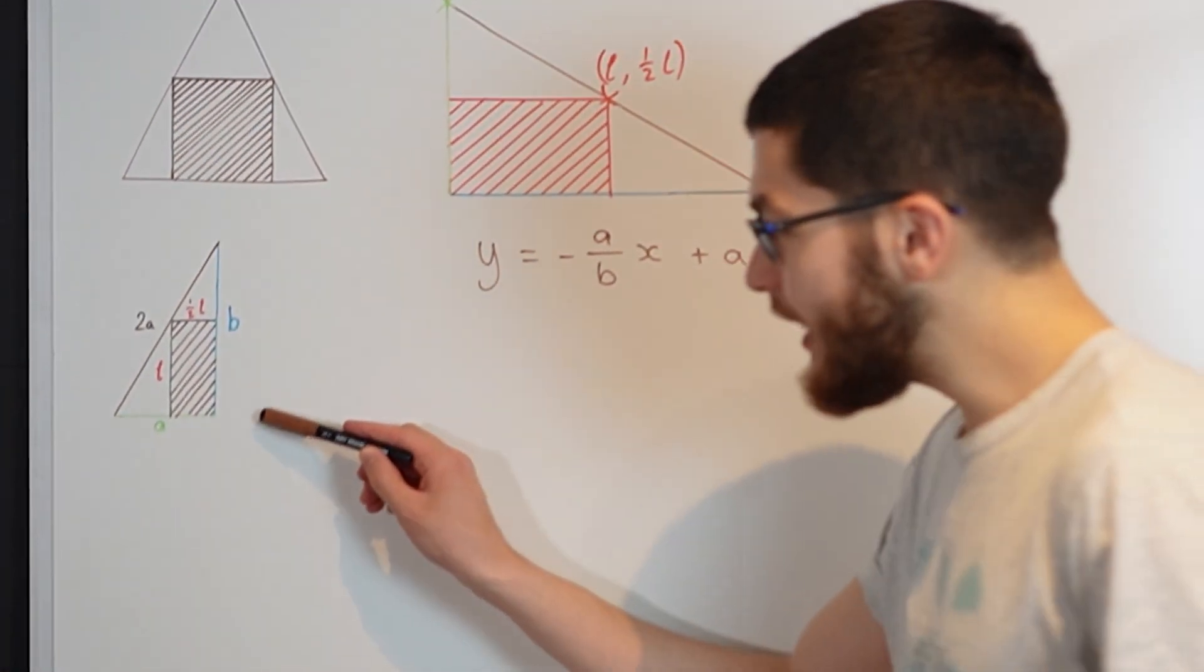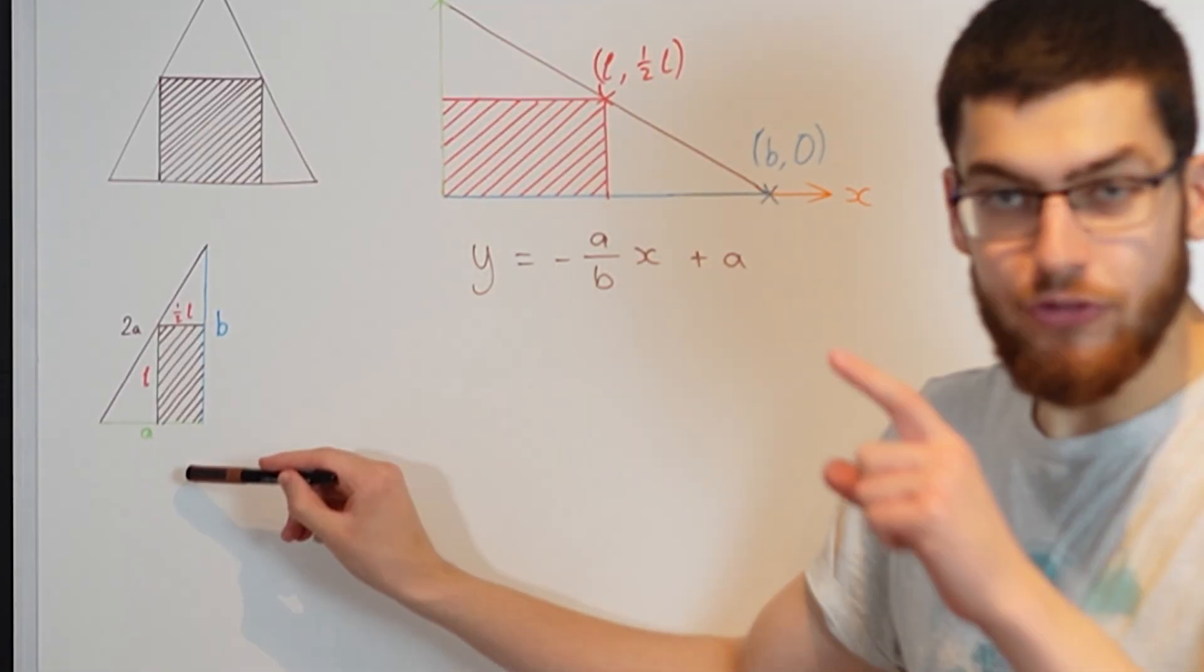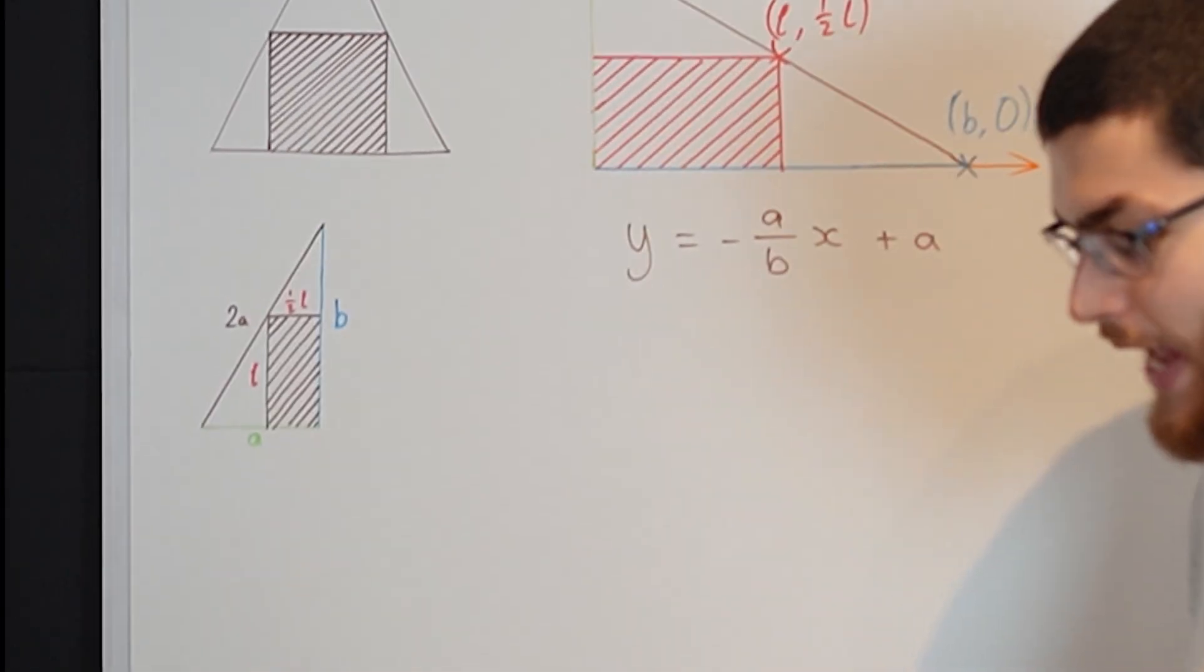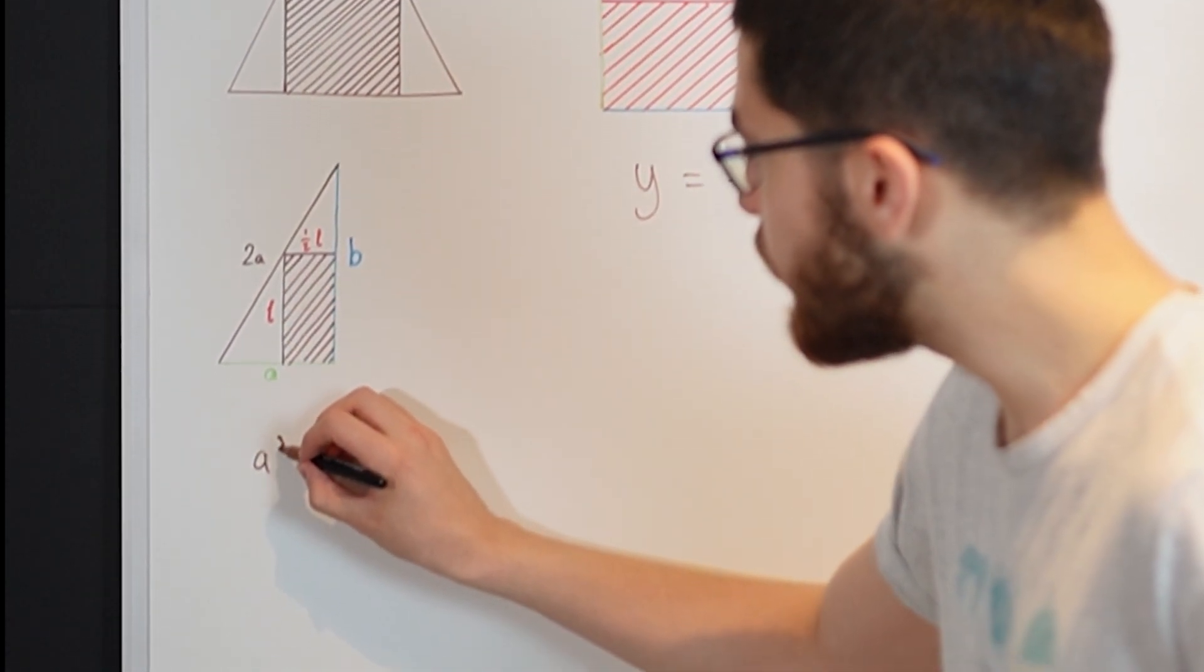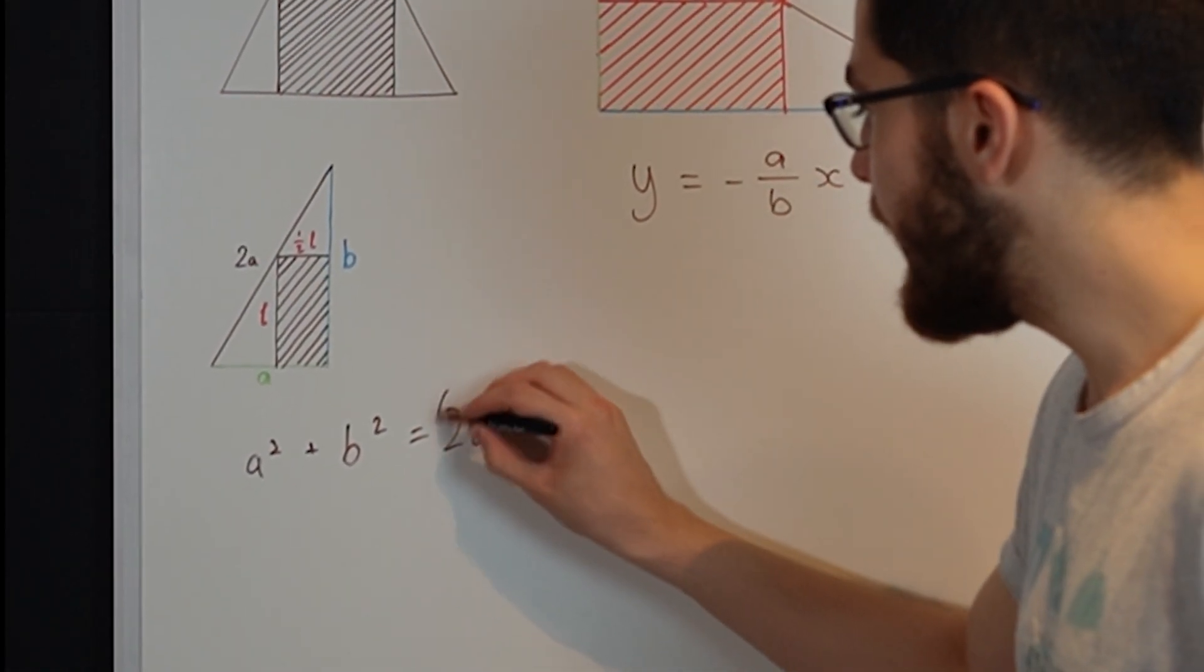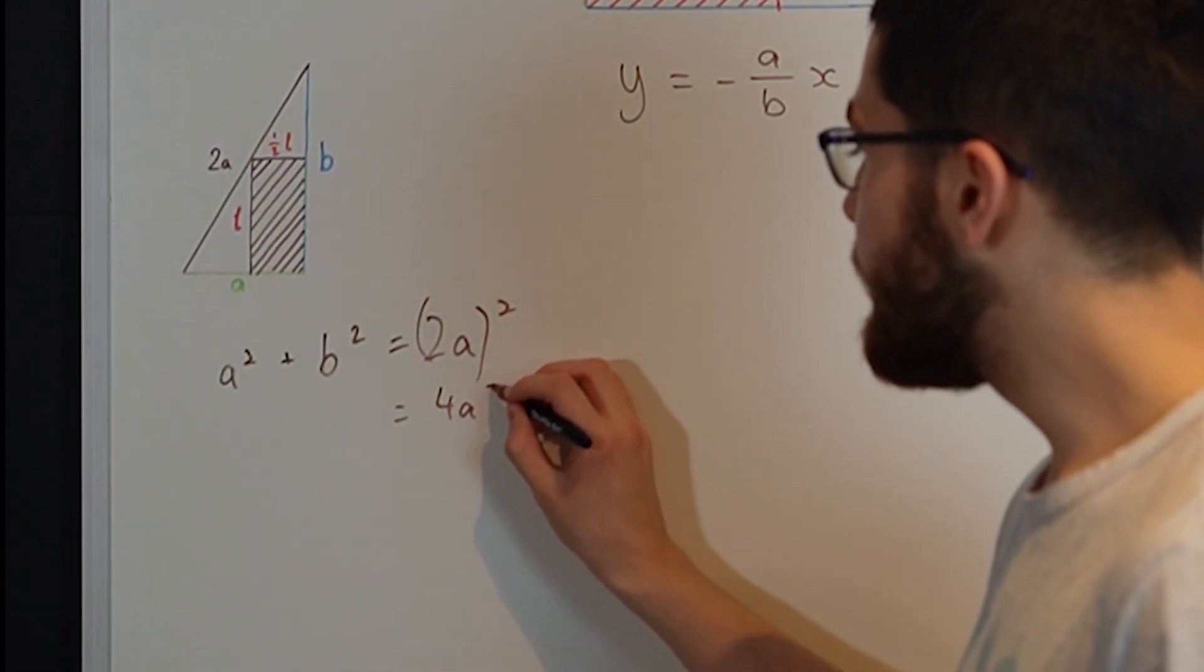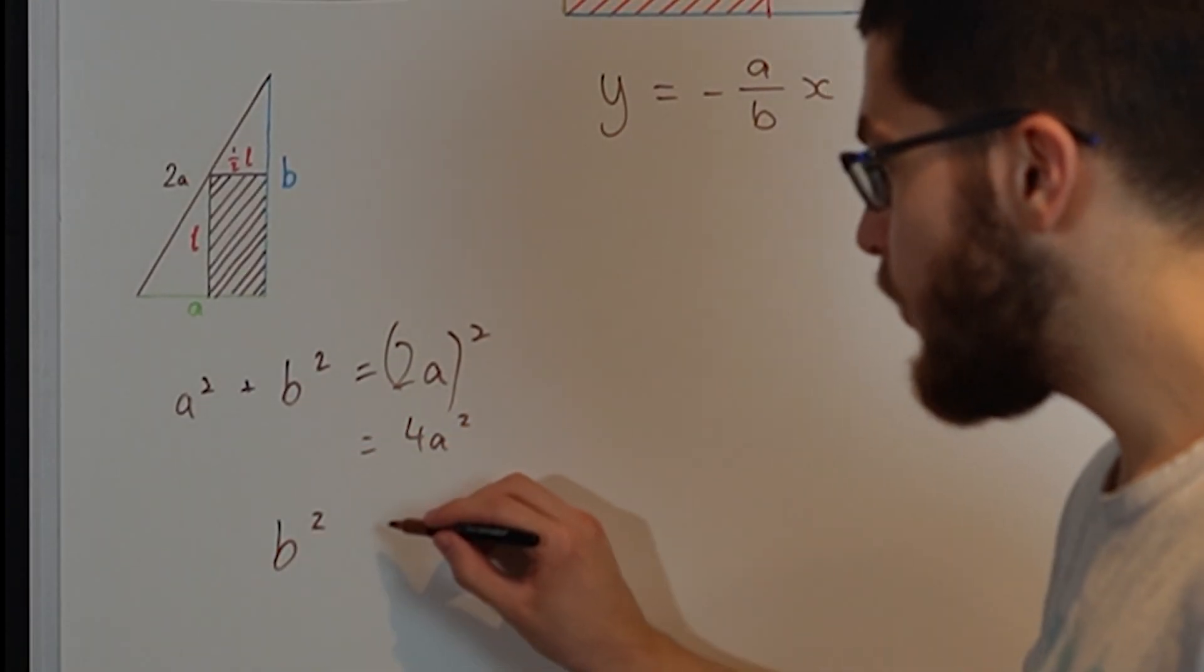But notice this right angle triangle, we've got all three of these sides. So we can actually use Pythagoras's theorem to calculate B in terms of A. We use A squared plus B squared equals C squared. So A squared plus B squared equals 4A squared. Now we know that B squared, if we subtract A squared from both sides,